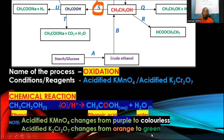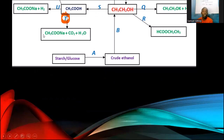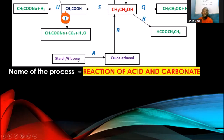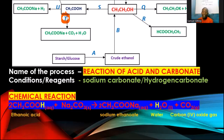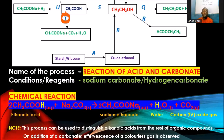Process T — ethanoic acid reacting with sodium carbonate to form sodium ethanoate, CO₂, and water — is a general reaction between an acid and a carbonate (or hydrogen carbonate). This reaction can be used to distinguish between alkanols and alkanoic acids: alkanoic acids react with carbonates to produce effervescence of a colorless gas (CO₂), while alkanols do not react with carbonates, so there is no effervescence.